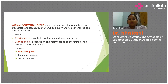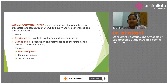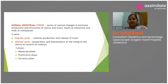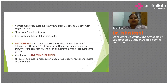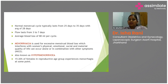Any problem happening in any cycle — whether it be the ovarian cycle or the uterine cycle — is manifested as a disorder in the menstrual phase. The normal menstrual cycle typically lasts from 25 to 35 days, varying from person to person, with an average of 28 days. That is why it is commonly referred to as a monthly cycle.